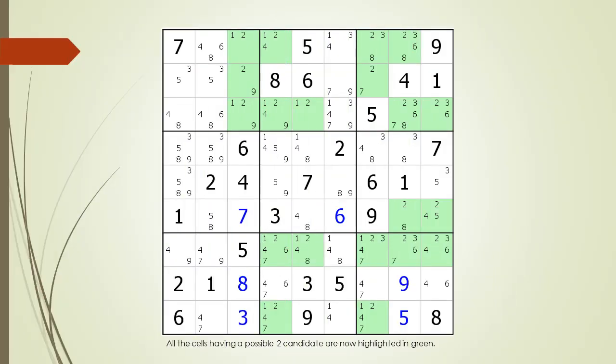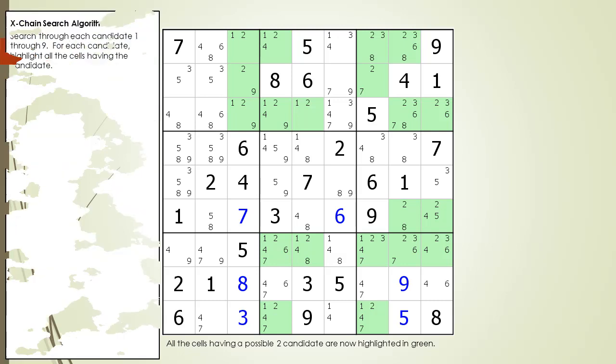Consider the following Sudoku in progress. When searching for X-Chains, we cycle through all the possible candidates 1 through 9. For this example, we are currently showing all the cells having a possible 2 candidate now highlighted in green.